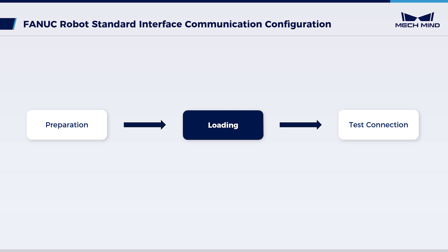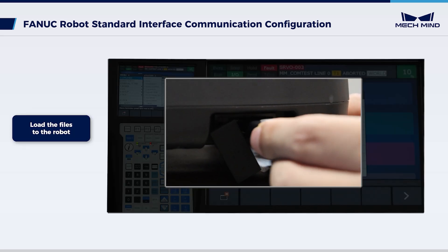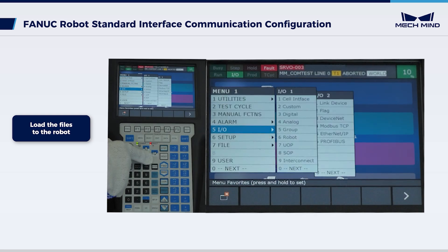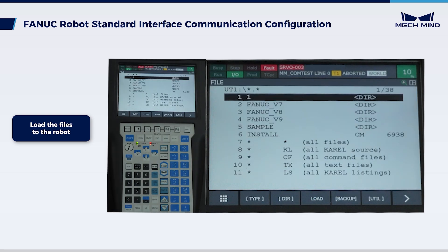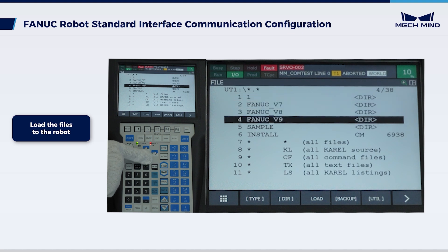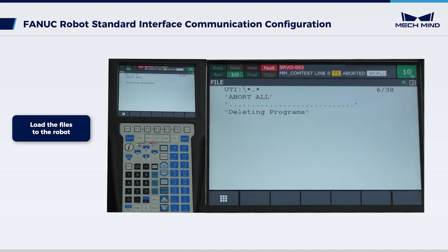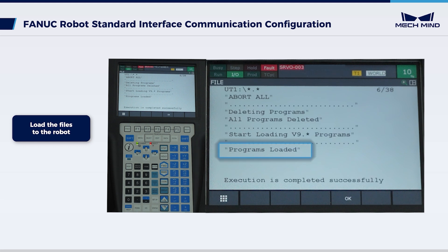Now it's time to load the program files. Plug the flash drive into the Teach pendant and navigate to the UT1 interface. In the root directory of the flash drive, select Install and then press Enter. Select Yes to start loading the programs. When the program's loaded message is displayed, the program files are loaded.